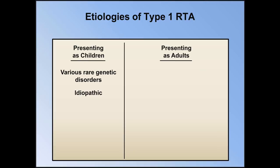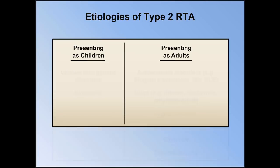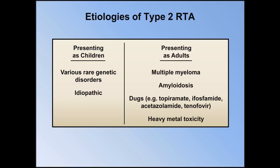In adults, etiologies of type 1 RTA include a variety of autoimmune disorders, best described in Sjögren's syndrome, rheumatoid arthritis, and lupus, as well as a number of drugs, hypercalciuria, obstructive uropathy, cirrhosis, and chronic toluene toxicity. Type 2 RTA in children is also usually due to various rare genetic disorders or is idiopathic. In adults, it may be due to multiple myeloma, amyloidosis, a variety of drugs, or heavy metal toxicity.